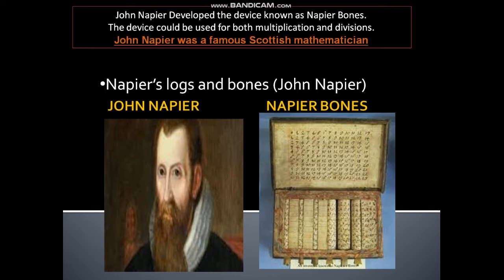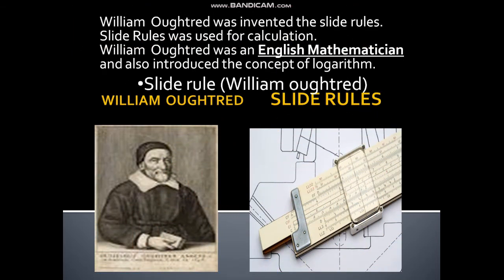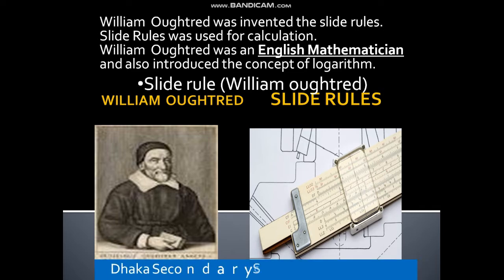The device known as Napier's bones was invented by John Napier, a famous Scottish mathematician. The slide rule was invented by William Oughtred, an English mathematician.